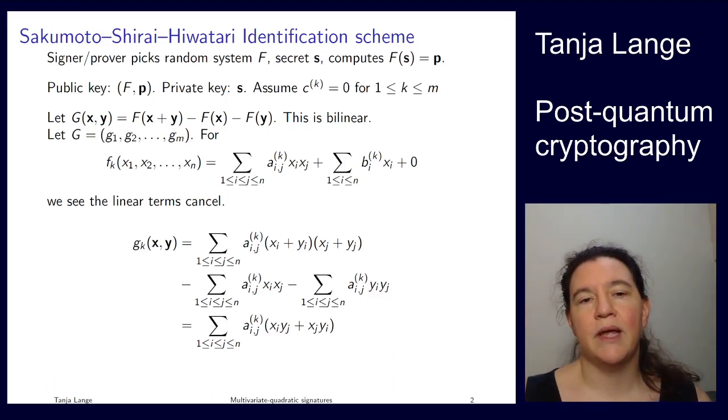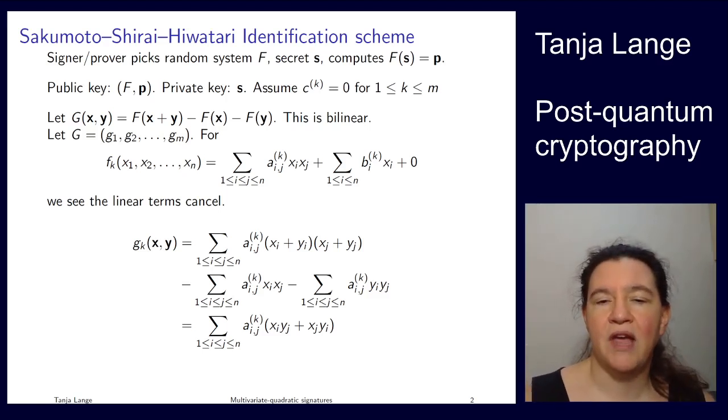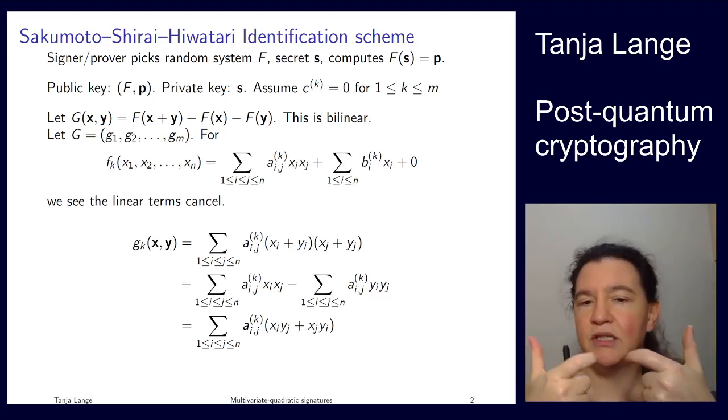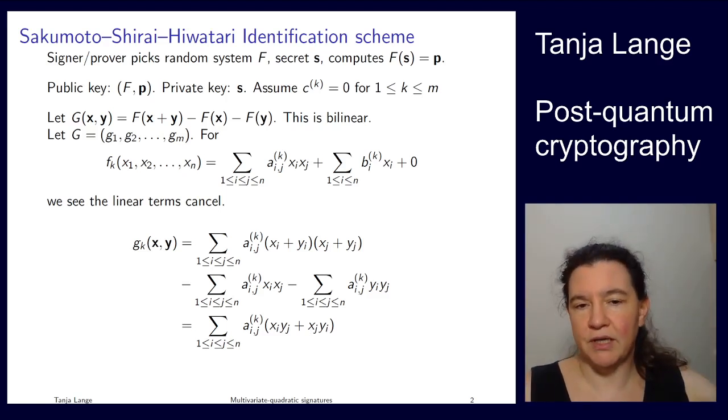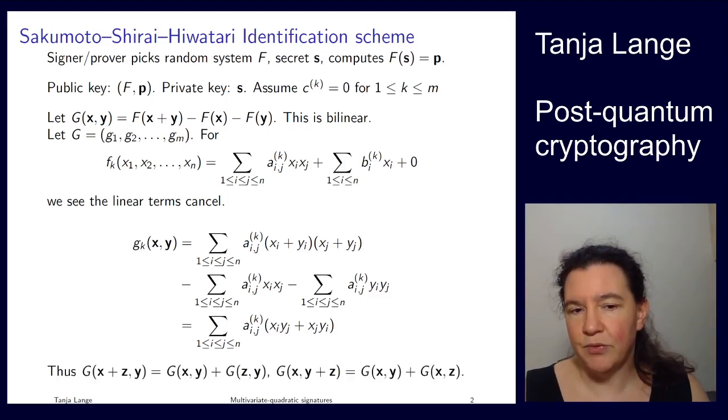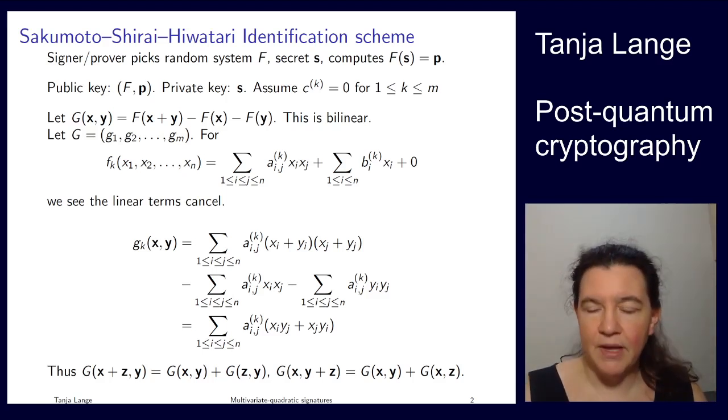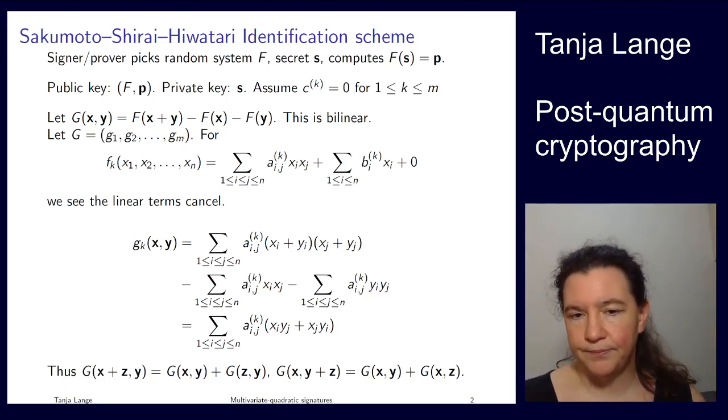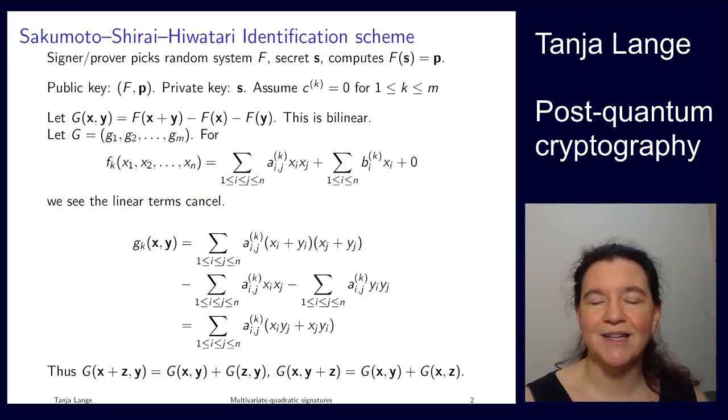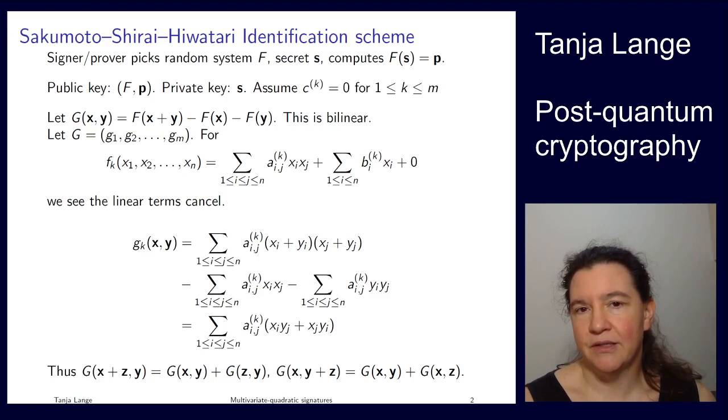Now when you look at this one and you're wondering what happens when replacing x by x plus z, then you're having a sum in the first component and a sum in the second component. And by distributive laws, you can just pull them outside. So you're getting the bilinear property, namely that G of x plus z comma y is the same as G of x comma y plus G of z comma y. And also the same in the second component.